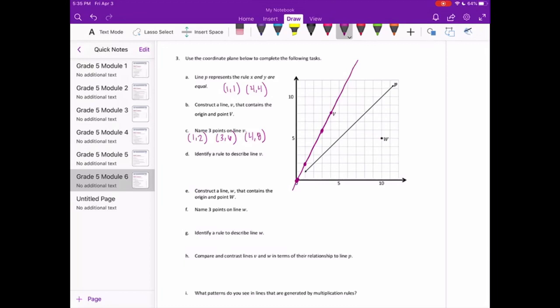Identify a rule to describe V. So let's look at the relationship between the X and Y values. 1 plus 1 is 2, but plus 1 doesn't work for 3 and 6, because 3 plus 1 would be 4, but the Y coordinate is 6, not 4. So we're probably multiplying. It looks like we're multiplying by 2. So I would say X times 2 equals Y. So we take the X, multiply it by 2, we get Y. 3 times 2 is 6, 4 times 2 is 8.